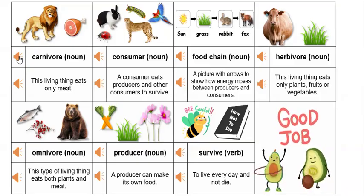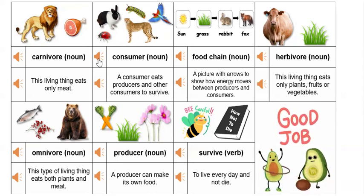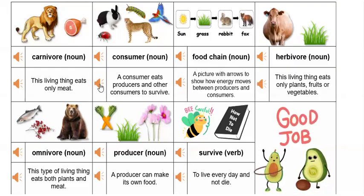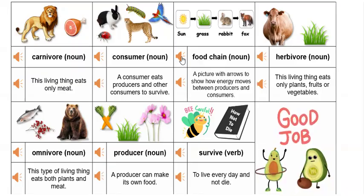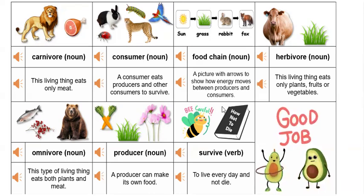Carnivore: this living thing eats only meat. Consumer: a consumer eats producers and other consumers to survive. Food chain: a picture with arrows to show how energy moves between producers and consumers.